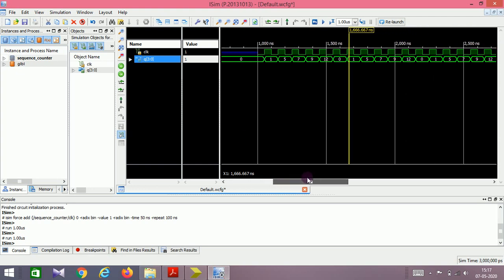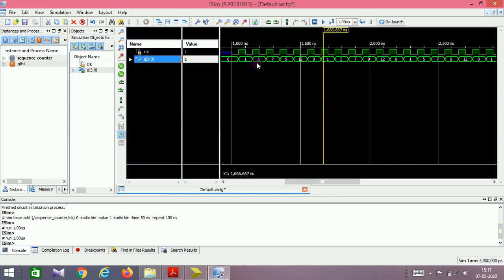Once you force a clock, you can see the counting of the sequence: 0, 1, 5, 7, 9, 12, 0, 1, 5, 7, 9, 12, and it goes on continuing. So this is how the sequence counter is implemented.